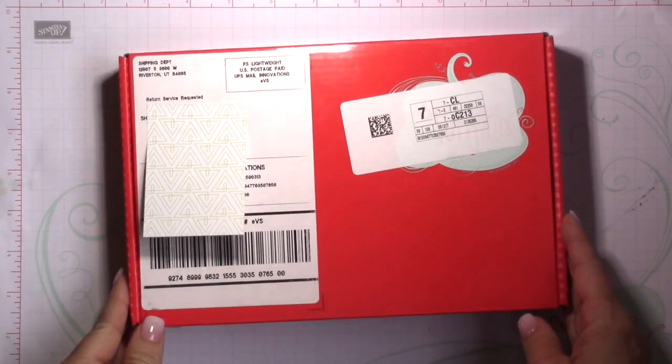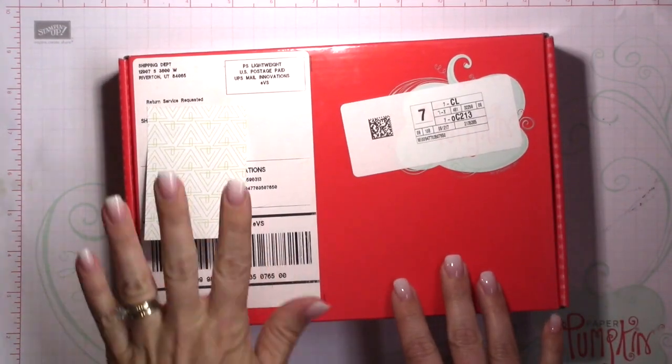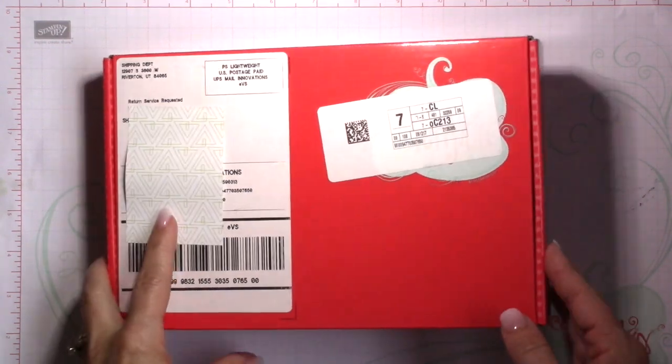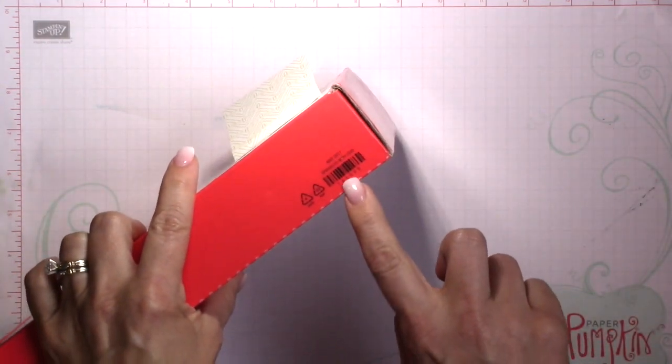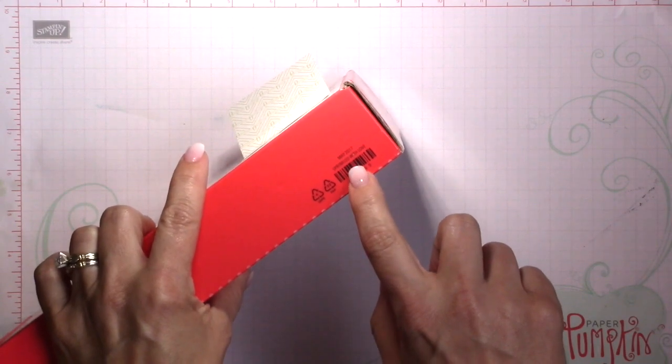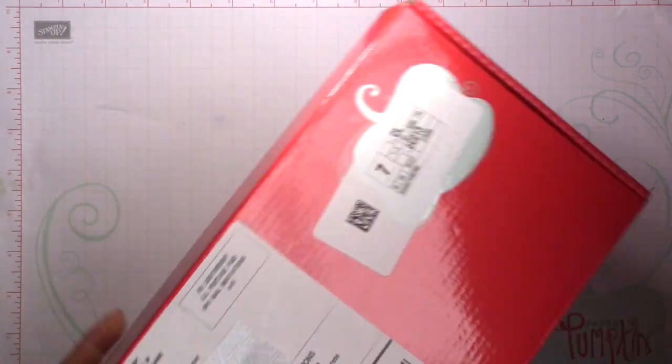Hey guys, it's Kara from iStampin.com. Thanks for joining me today. Today I'm going to be doing the May Paper Pumpkin unboxing and then I'm also going to do an alternative project, a little bonus project for you.